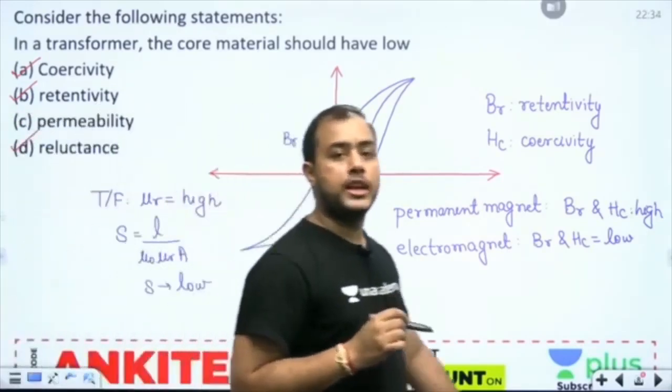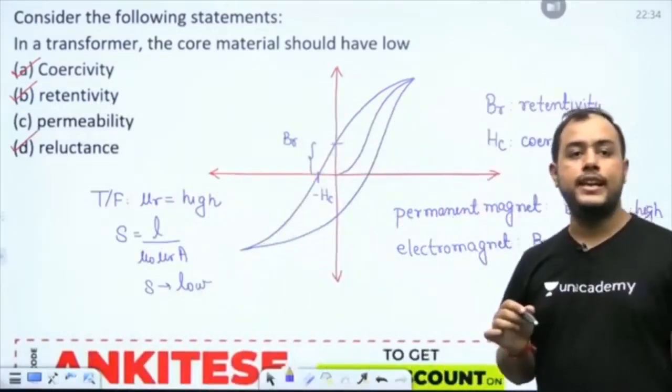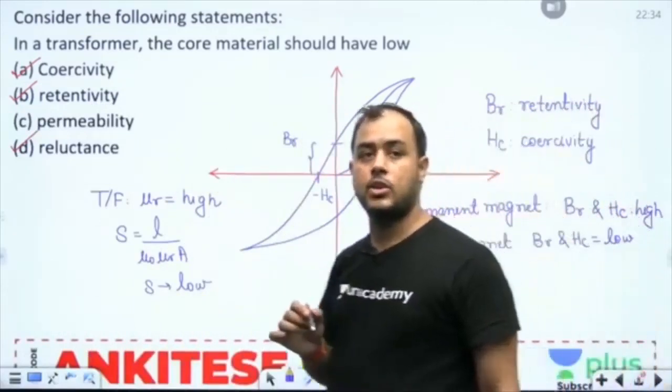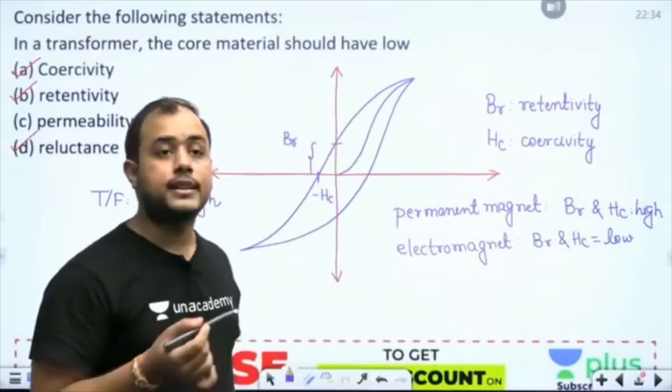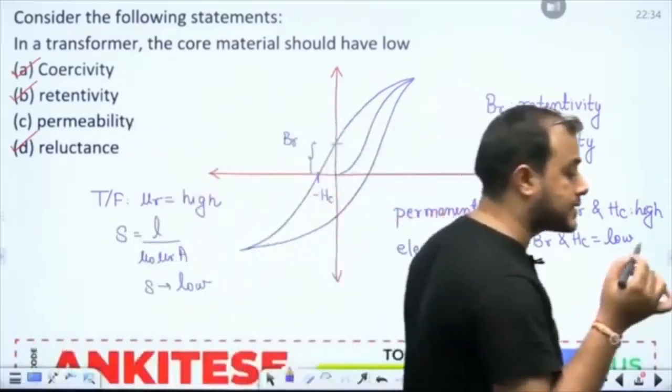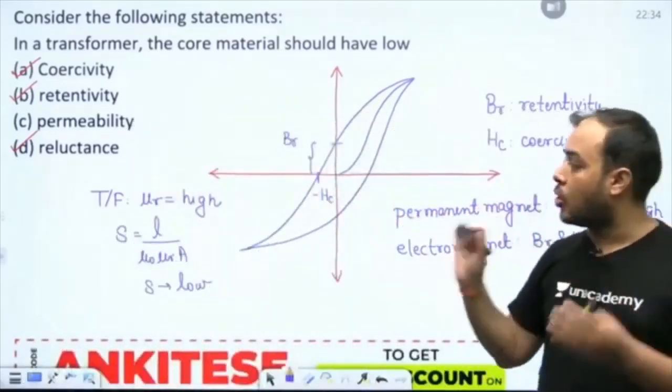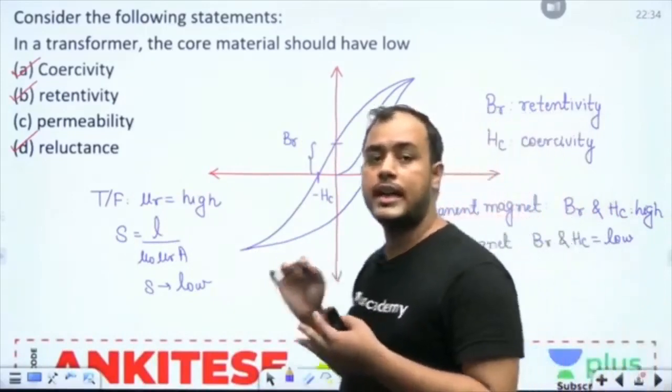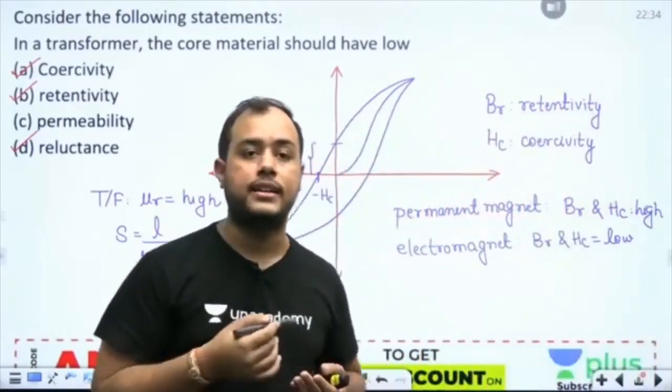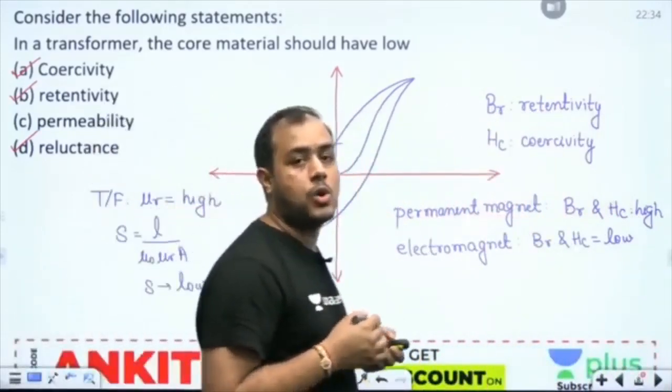Why do we need low reluctance? We need low reluctance so that the flux is constrained in the core of the transformer, it does not leak outside.